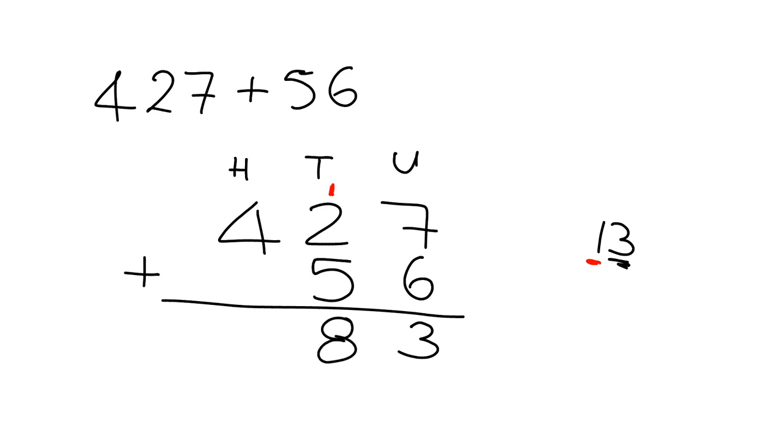And then we look at the very last thing. Here we've got 4 hundreds and there were no hundreds here. So 4 hundreds plus no hundreds adds up to 4. And so our answer is 483.